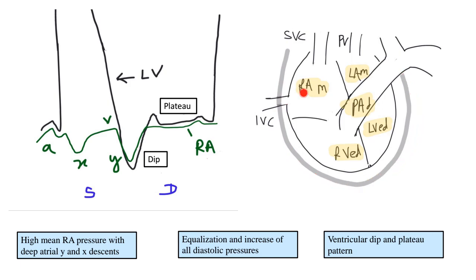The right atrial mean pressure is the same as the right ventricular end diastolic pressure, is the same as the pulmonary arterial diastolic pressure, which is equal to the mean pressure of the left atrium — or the mean wedge pressure — which is equal to the end diastolic pressure of the left ventricle.